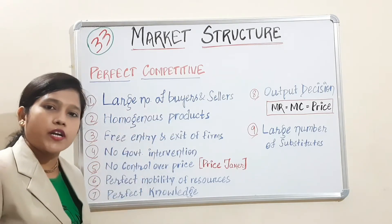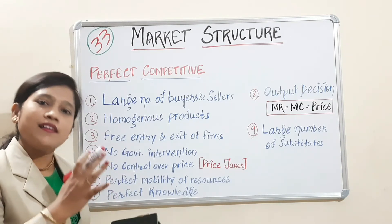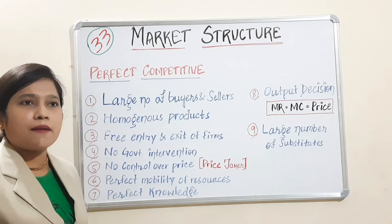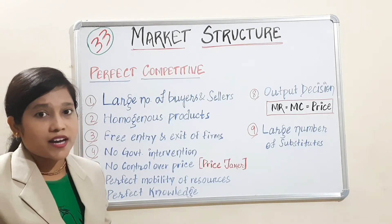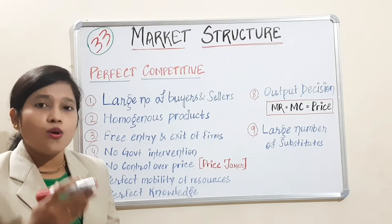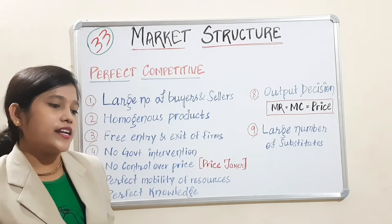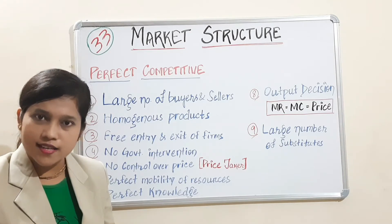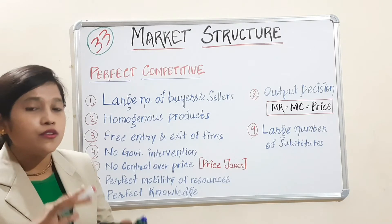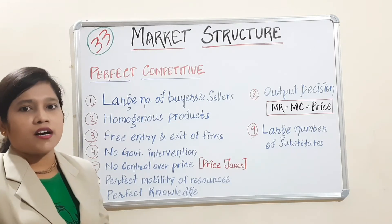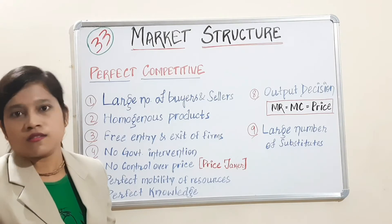The next characteristic is homogeneous products — that means similar kinds of products are there. For example, in agricultural markets, only agricultural produce will be sold. We cannot have agricultural products, textile garments, and gold ornaments all in the same market. Only one type — homogeneous products.